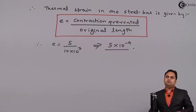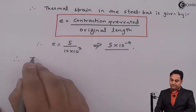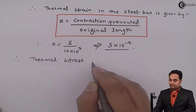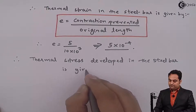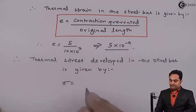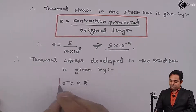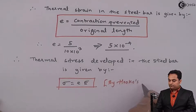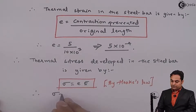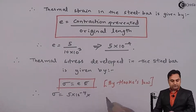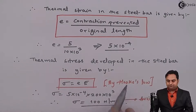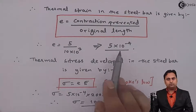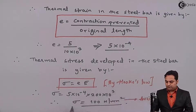After getting the thermal strain I will calculate the thermal stress. Therefore thermal stress developed in the steel bar is given by thermal strain into Young's modulus, by Hooke's law. The value of thermal strain is 5 into 10 raised to minus 4, and Young's modulus is 200 into 10 raised to 3. Multiplying these gives the thermal stress as 100 newton per mm square.